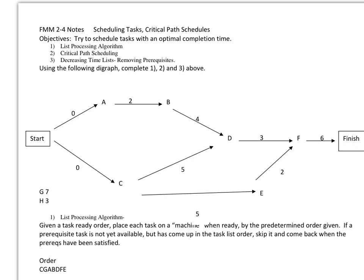Hi, this is finite math modeling 2.4 notes. What we're going to be doing is scheduling tasks and we're also going to be doing some critical path schedules with that, and we're going to try to see if we can find an optimal completion time for setting up certain tasks in certain machines that we're dealing with.